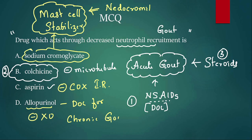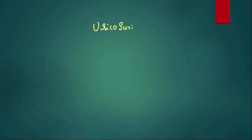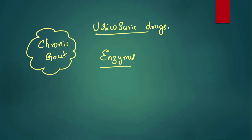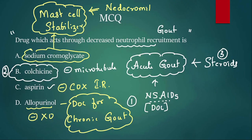So in the exam, if they ask the drug of choice for chronic gout, the answer is allopurinol. Tell me in the comment section: what are the uricosuric drugs used in chronic gout, and also the enzymes used in chronic gout? The answer for this MCQ is option B — colchicine.